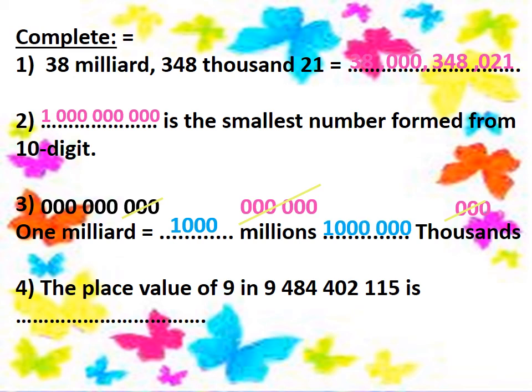Number four: what is the place value of nine in nine billion, four hundred eighty-four million, four hundred two thousand, one hundred fifteen? The place value of nine here is milliard or billion.